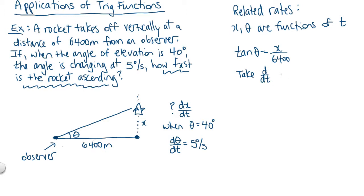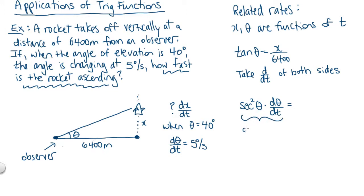We want to take d/dt of both sides — that is our standard procedure in related rates. Starting with the left side, we need to take the derivative of tan(theta) with respect to t. This is going to involve the chain rule, because tan(theta) is a function of theta. Taking the derivative with respect to theta gives us secant squared theta, and we then need to multiply by d-theta/dt. This comes from the chain rule: df/d-theta times d-theta/dt.